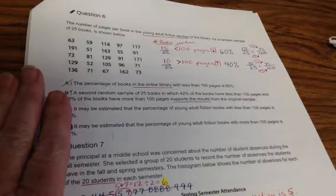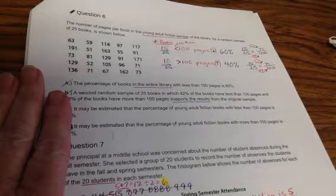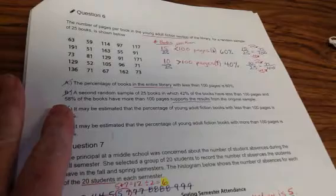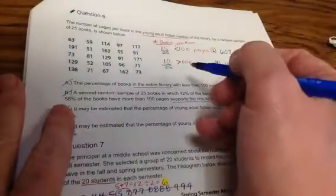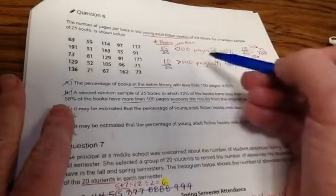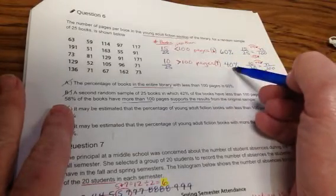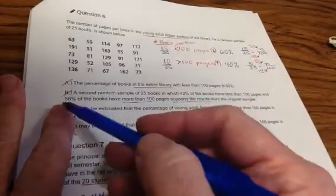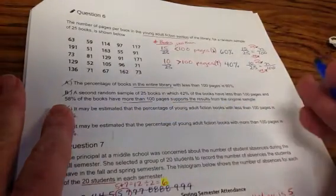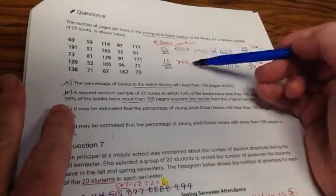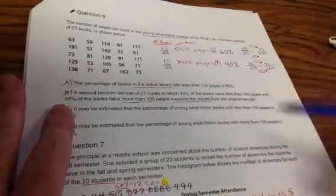Second random sampling of 25 books in which 42% of the books have less than 100 pages and 58% of the books have more than 100 pages supports the results. Well, the more than 100 pages should have been the 40, and they're saying that that's the 58. So these numbers are kind of switched. The numbers were switched, so forget that one.